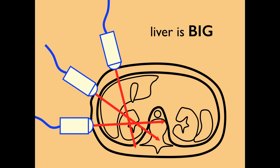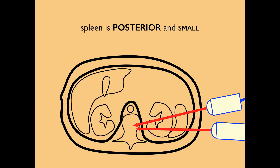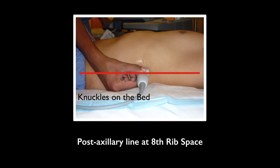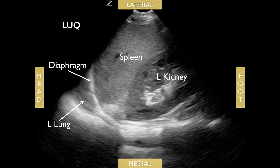The liver is large, so it's fairly easy to see Morrison's pouch on the right side. However, the spleen is fairly small, so for the left upper quadrant make sure your knuckles are on the bed because the spleen is fairly posterior. You'll be at the posterior axillary line around the 8th intercostal space.